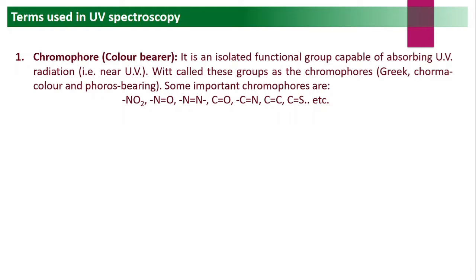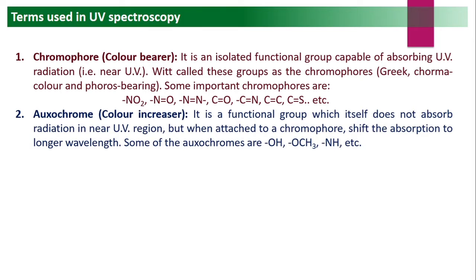The next term is auxochrome, meaning 'color increaser.' This is a functional group which itself does not absorb any radiations in the near UV region, but when attached to a chromophore, it shifts the absorption to a longer wavelength. Examples of auxochromes include OH, OCH3, NH2, and similar groups.